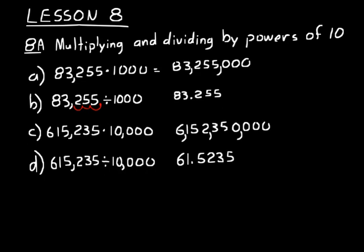So when you multiply by a power of 10, the decimal point moves to the right. When you divide by a power of 10, the decimal point moves to the left. Try to remember that, and hopefully that makes sense based on what we've been doing in the previous lessons.